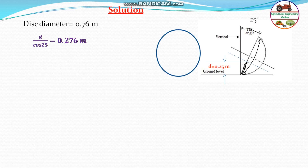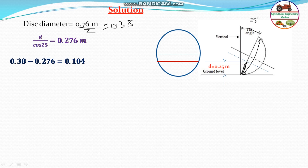Looking at the disc profile, the diameter is 0.76 meters so the radius is 0.38 meters. The distance from the center to the chord equals the radius minus the projected depth, which is 0.38 minus 0.276, giving 0.104 meters. This is the perpendicular distance from the center to the chord.